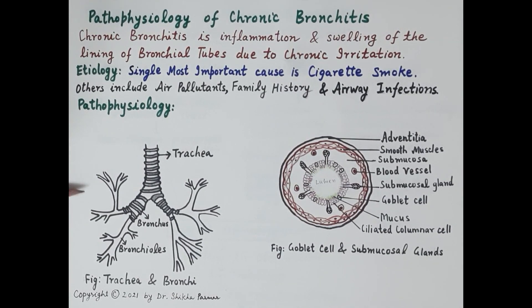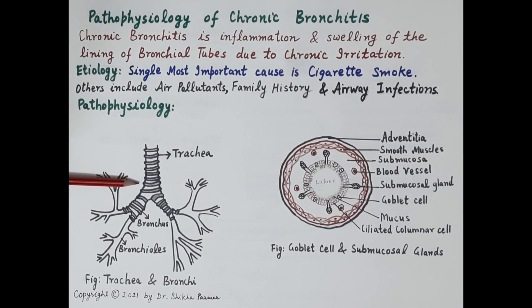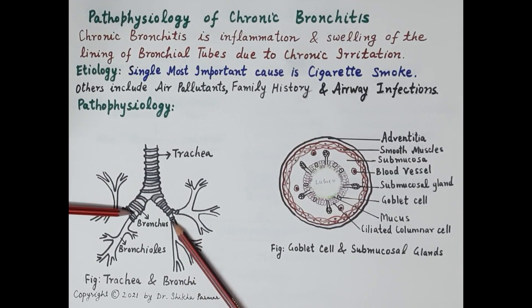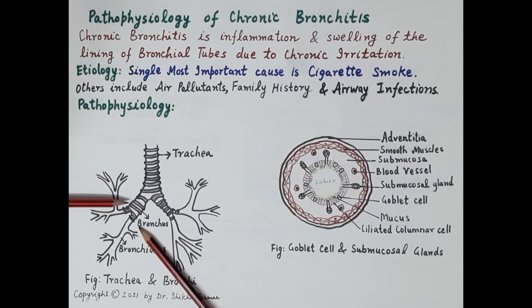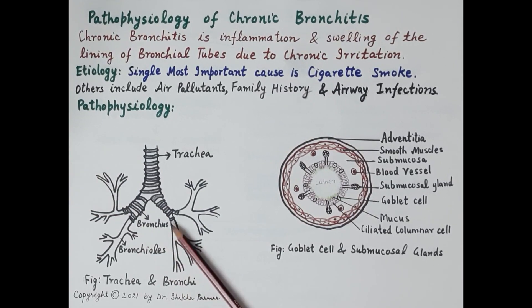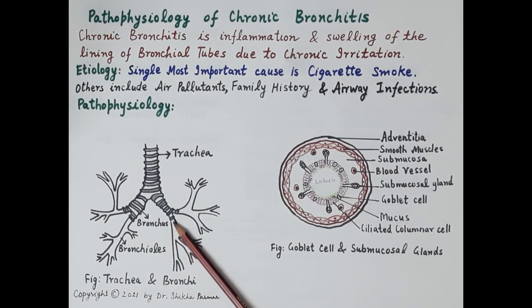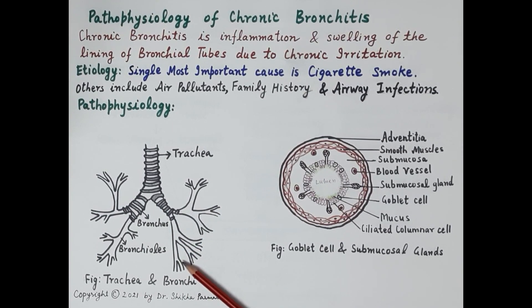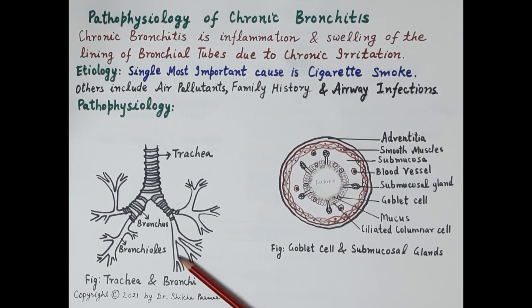This trachea is a hollow tube-like structure and is also termed as a windpipe. The trachea branches into two bronchi — a single branch is called a bronchus. The bronchi further give rise to progressively smaller branches called bronchioles. These bronchioles conduct air to alveoli, or the air sacs, where gaseous exchange takes place.